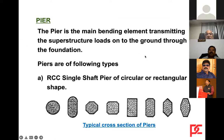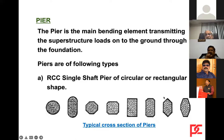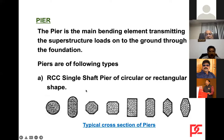The pier is the main bending element transmitting superstructure loads onto the ground through the foundation. Piers are of the following types: RCC single shaft piers of circular, rectangular, or other shapes. These shapes are required to reduce obstruction to river water flow. Semi-circular cut-waters are adopted compared to flat shapes, as they give much less obstruction to water flow, thereby reducing scouring action.